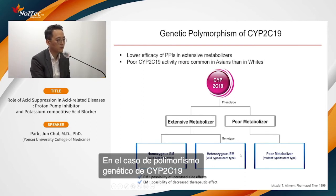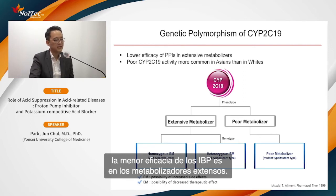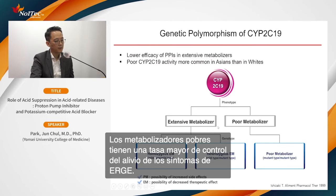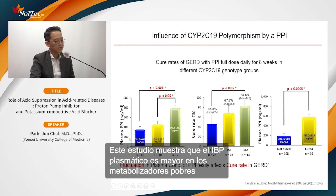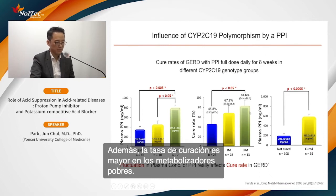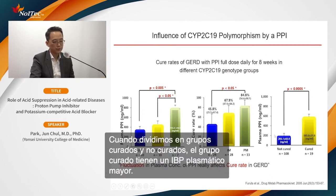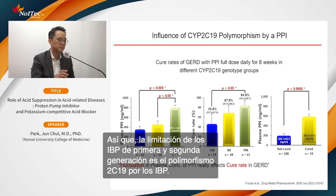The third therapy-related issue is CYP2C19 genetic polymorphism. Poor metabolizers have higher plasma PPI levels and higher GERD cure rates compared to extensive metabolizers. This study shows plasma PPI is much higher in poor metabolizers, and the cure group has significantly higher plasma PPI. This CYP2C19 polymorphism is a key limitation of first- and second-generation PPIs.